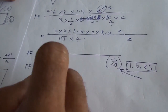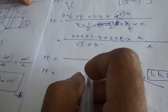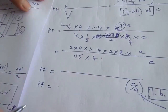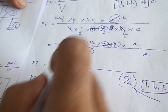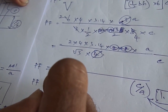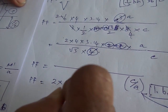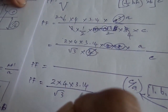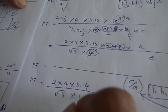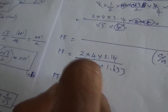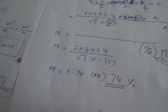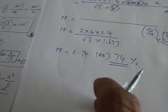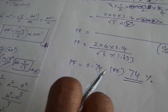Putting all numerical values in: 2 × 4 × 3.14, divided by 1.633 times the remaining factors, comes to 0.74, or 74%. So the packing factor for a hexagonal close-packed structure is 74%. Thanks for watching.